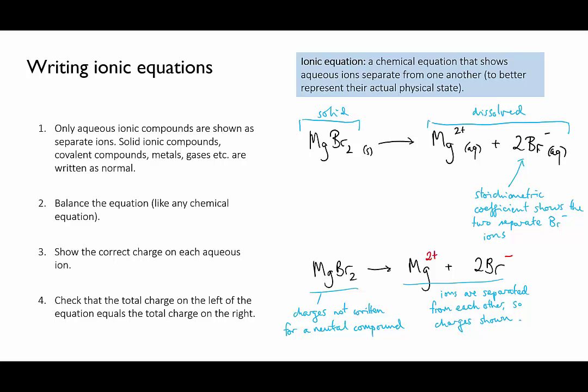Fourth, in the same way that you balance atoms on the left and right of the equation, you should balance the total charge on the left and right of the equation. Remember conservation of mass. We can't lose or gain any whole atoms in a chemical reaction, but neither can we gain or lose any electrons. So whatever the total charge is that we start with on the left, it should remain the same on the right.